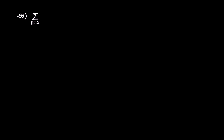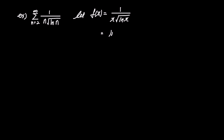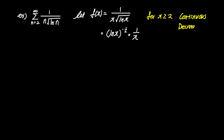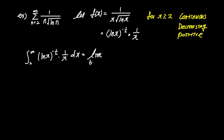Now let's examine the convergence or divergence of the sum of 1 over n times square root of ln n, as n goes from 2 to infinity. First, let's set f of x as 1 over x times square root of ln x, and for easier integration, we write this as (ln x) to the power of negative one-half times 1 over x. Now let's consider the CDP conditions. For x greater than or equal to 2, this function is always continuous, decreasing, and all terms are positive. Having satisfied all the conditions, let's proceed with the integration.